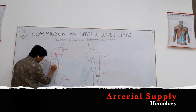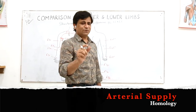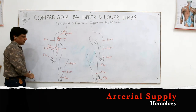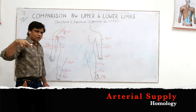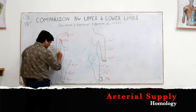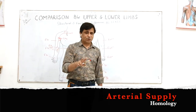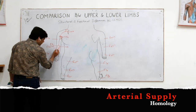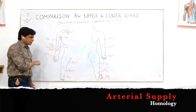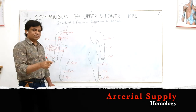The ulnar artery in the forearm gives its largest branch — the common interosseous artery. The common interosseous artery at the upper part of the interosseous membrane splits into anterior and posterior interosseous arteries. The posterior interosseous artery is the minor division, and the anterior interosseous artery is the major continuation of the common interosseous.